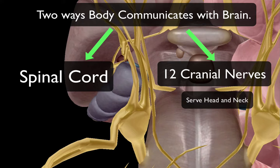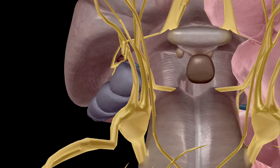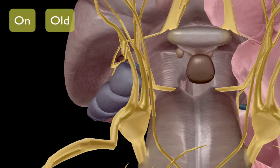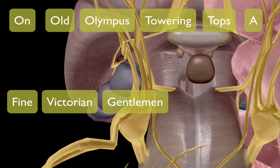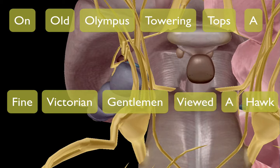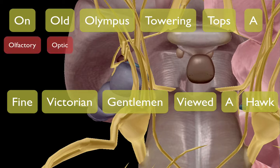To start off, I want to give you a mnemonic that will help you memorize these cranial nerves. The first letter of each word signifies the first letter of the cranial nerve. Here it is: 'On Old Olympus Towering Tops, A Fine Victorian Gentleman Viewed A Hawk.' The cranial nerves that coincide are: olfactory, optic, oculomotor, trochlear, trigeminal...